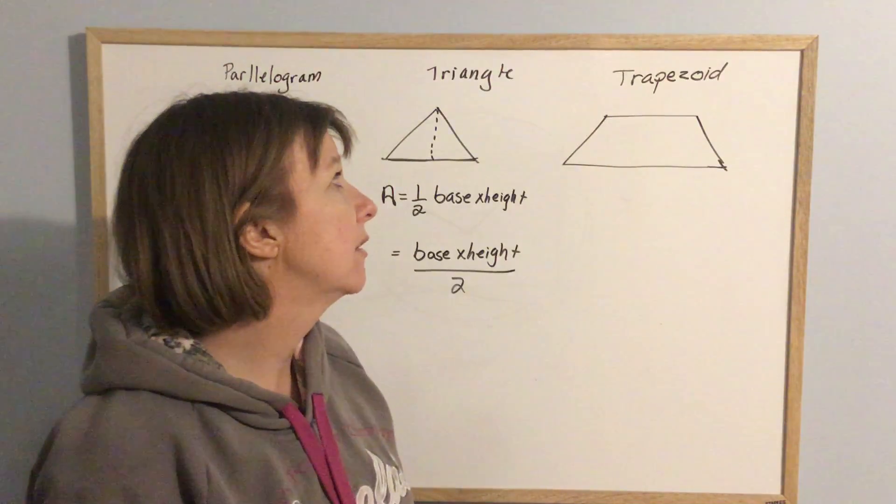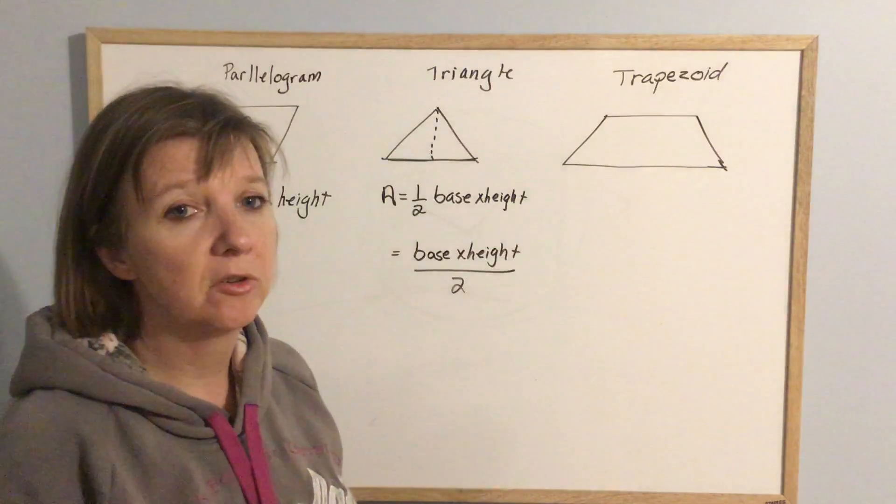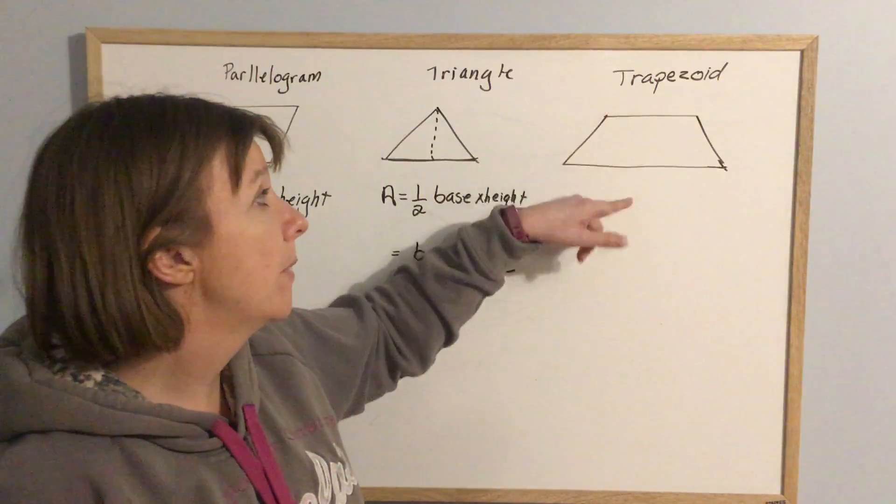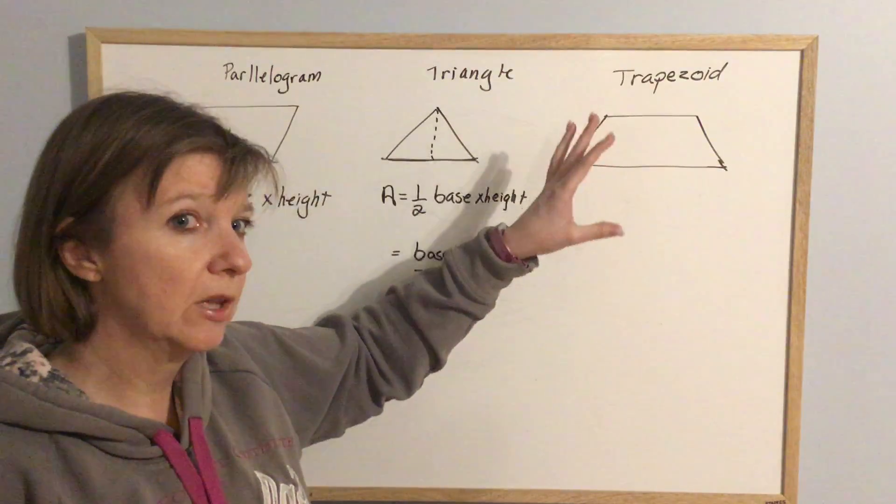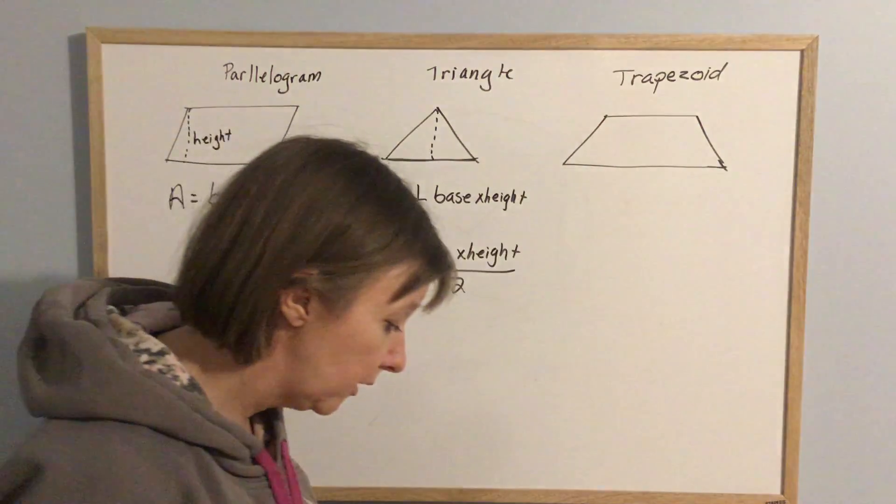Trapezoid. A trapezoid is a shape where the top and the bottom are different lengths. It doesn't matter whether the top is shorter or the top is longer. They're just different lengths and then they're joined by the sides.